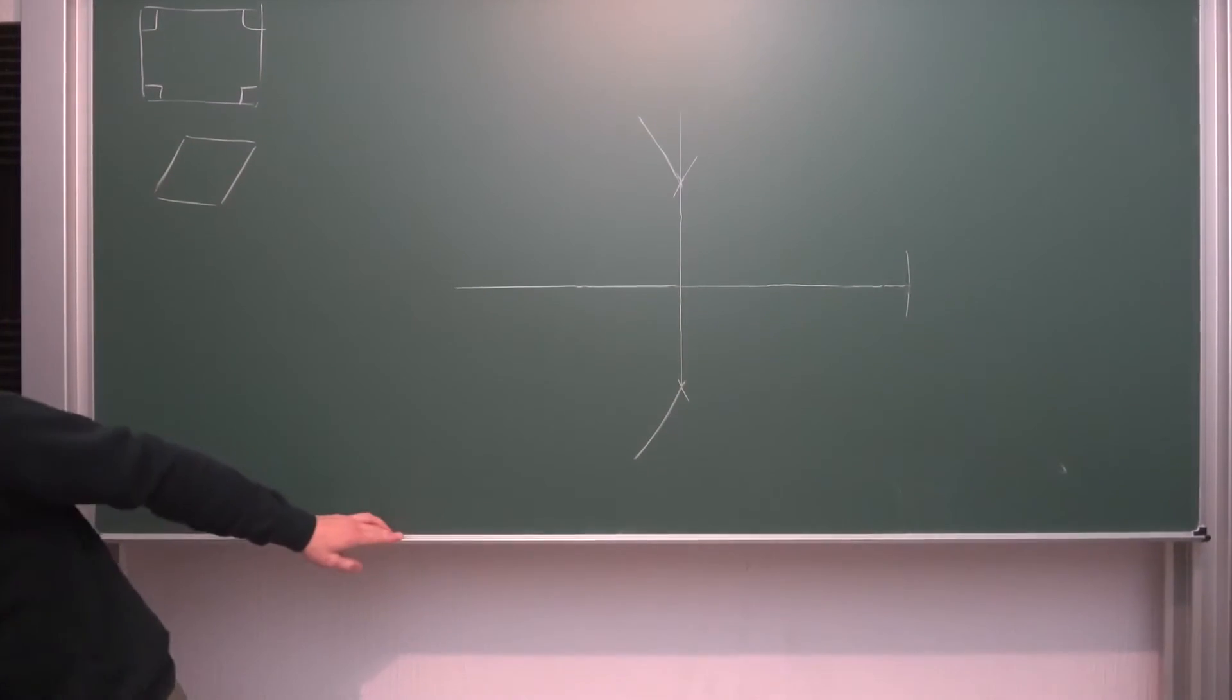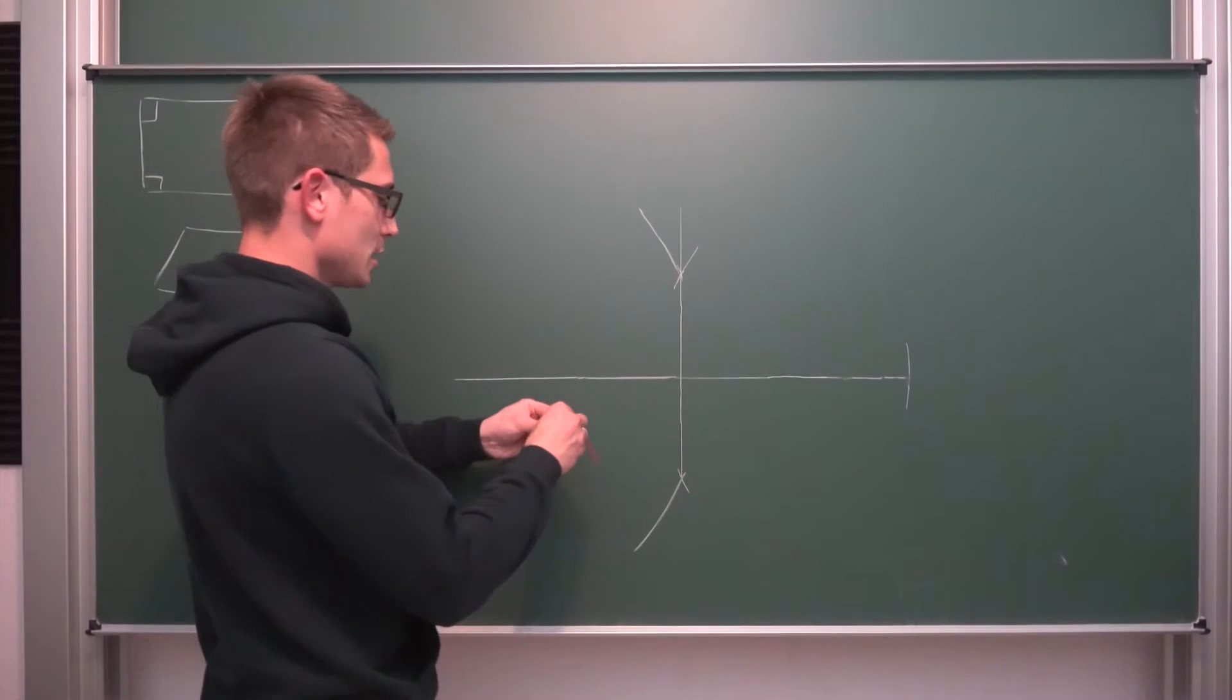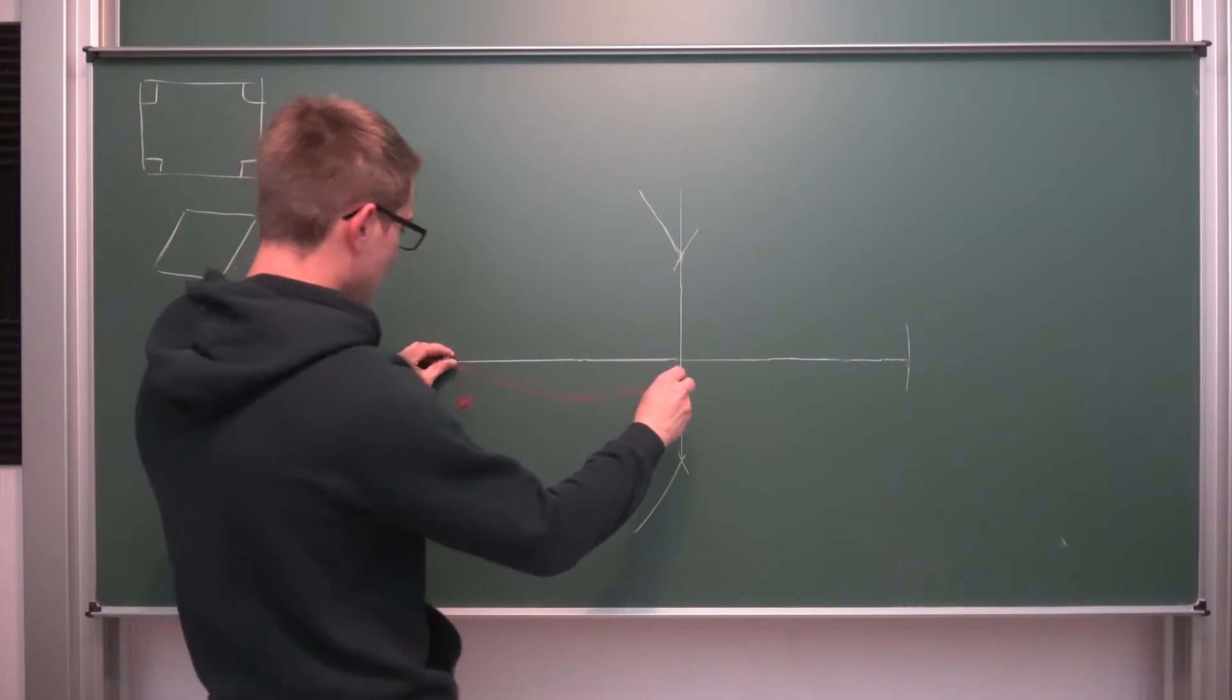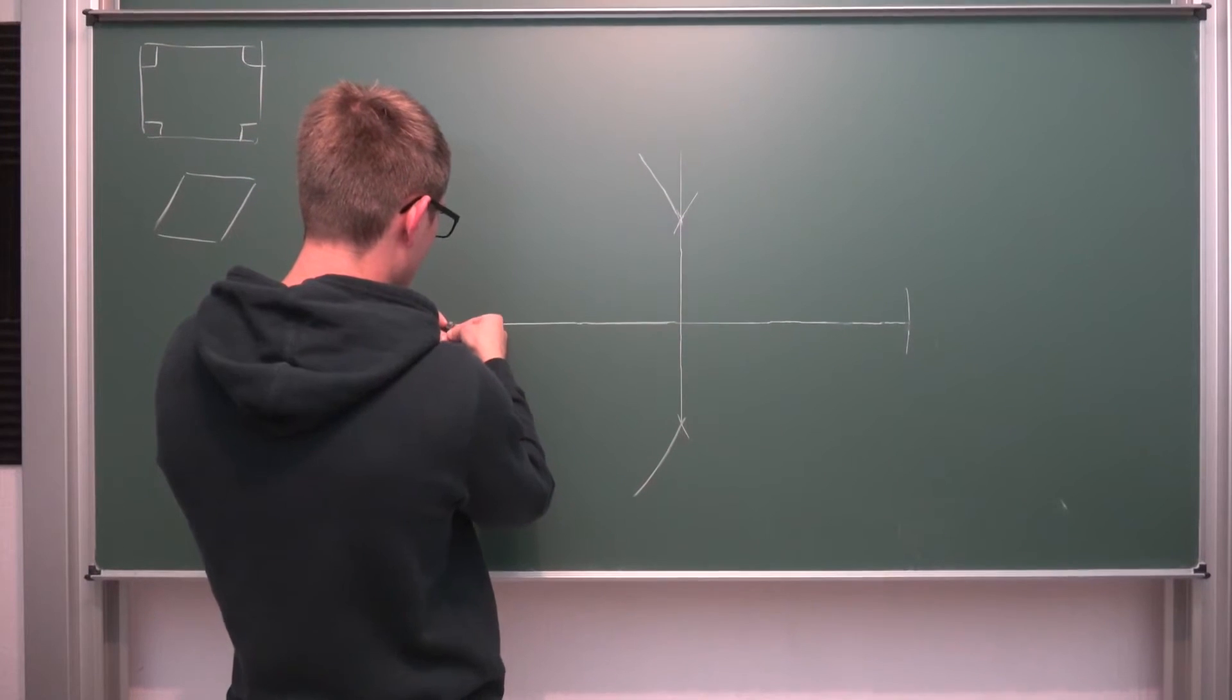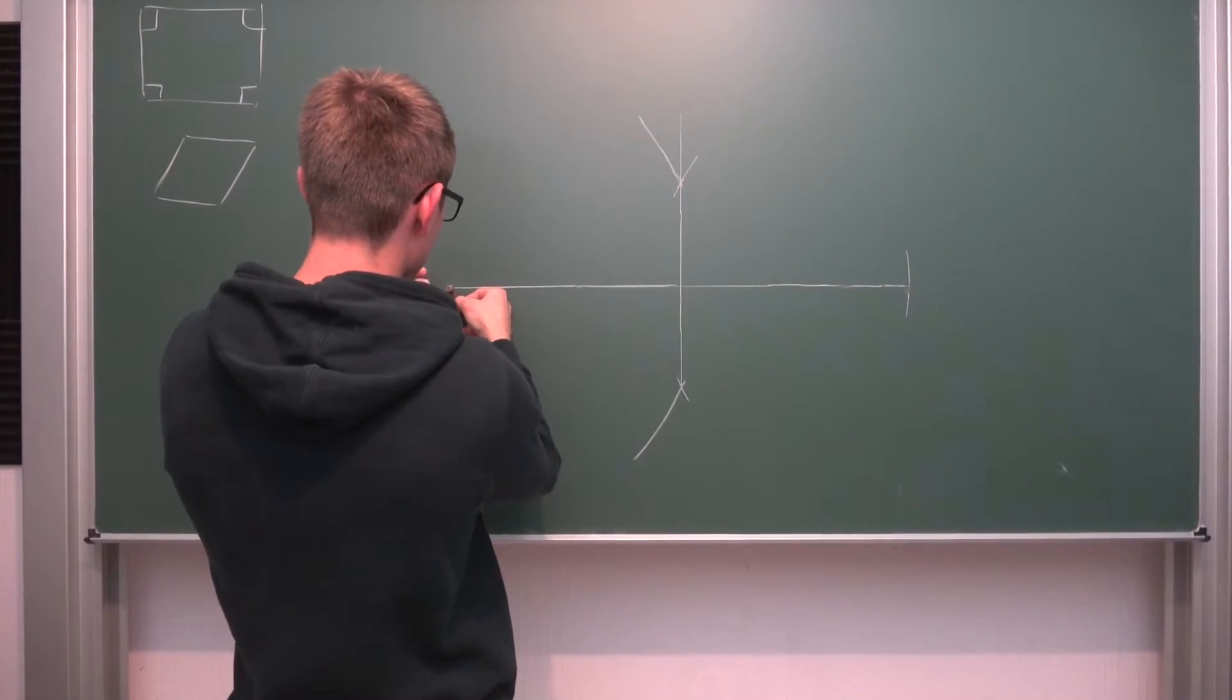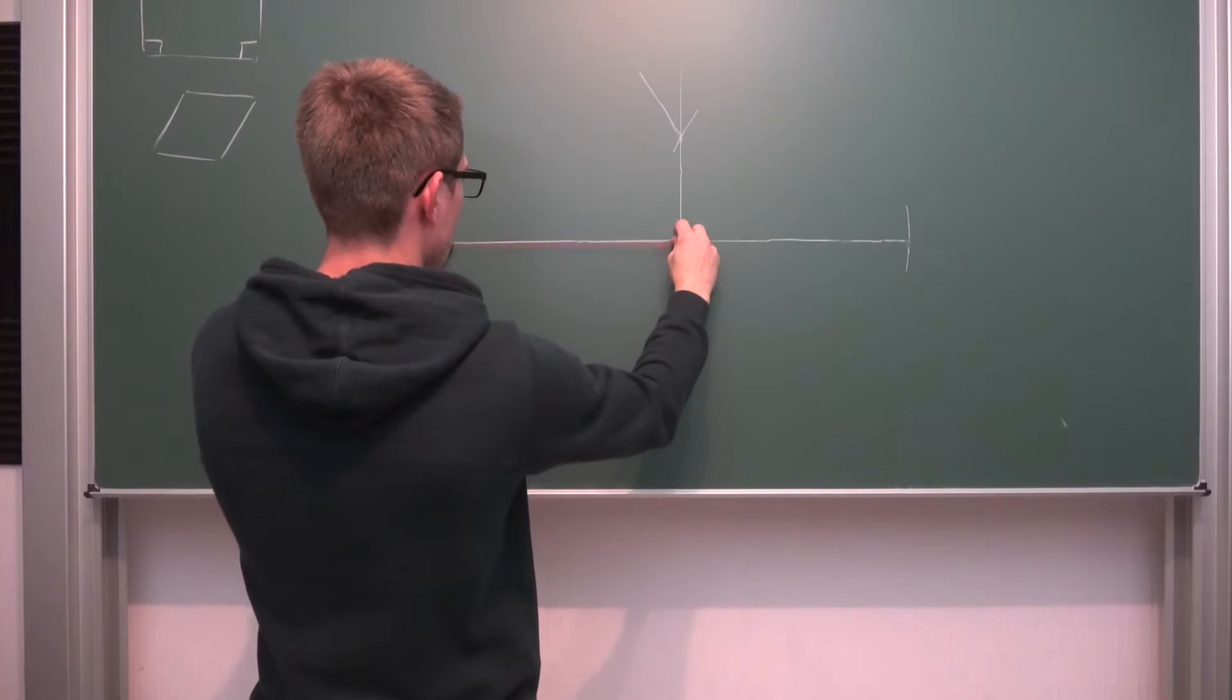So we need to make use of our compass yet again, which is fairly easy. We are just going to go through the same procedure yet again. So what we are going to do is we are going to set our compass to be the same length as our side length here and then we are just going to simply draw.